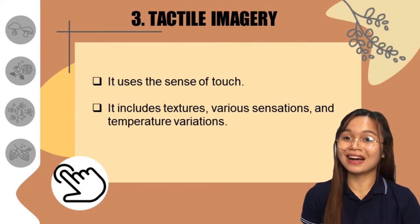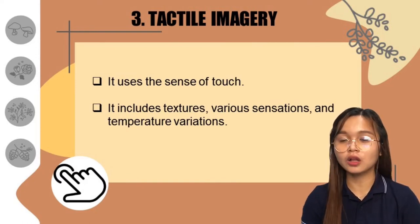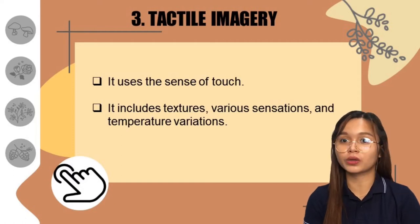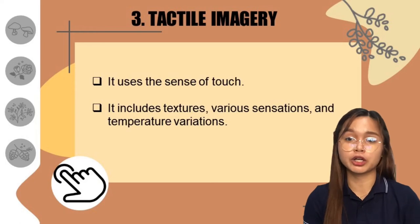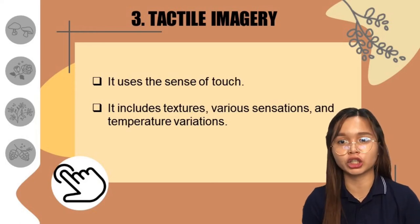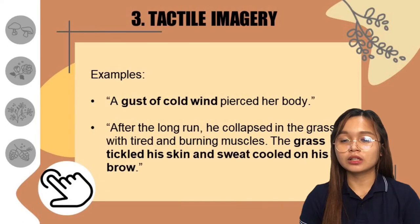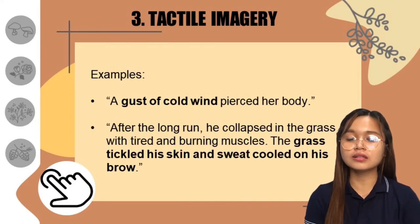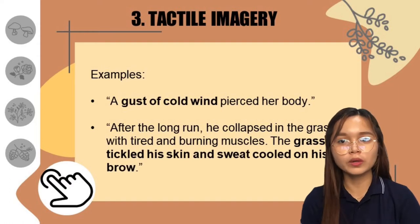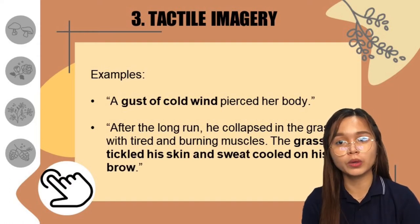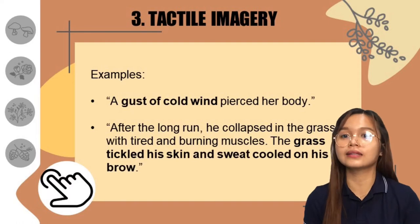Next, we have tactile imagery. It describes what we feel or touch — obviously using our sense of touch. It includes textures, various sensations, and temperature variations. For example: 'A gust of cold wind appeared to her body.' Gust of cold wind — we can really feel the coldness of the wind in that sentence. That is why it is tactile imagery.